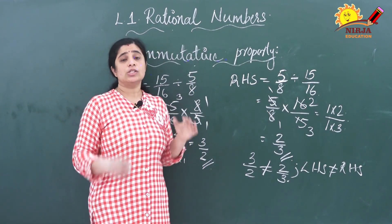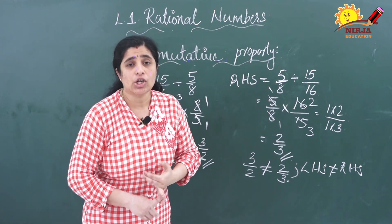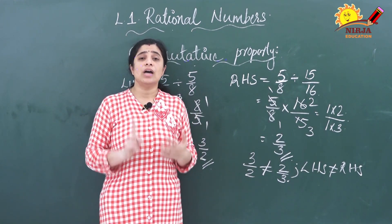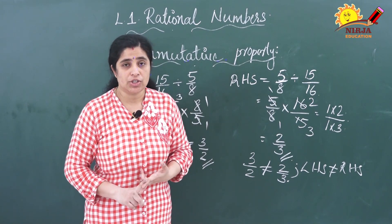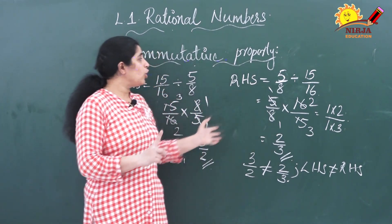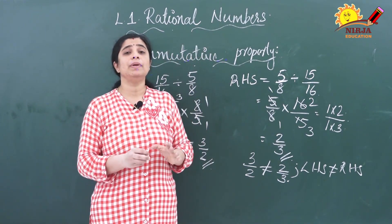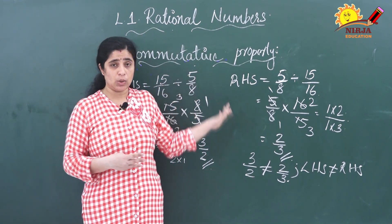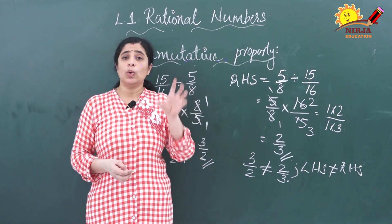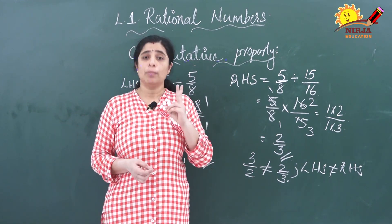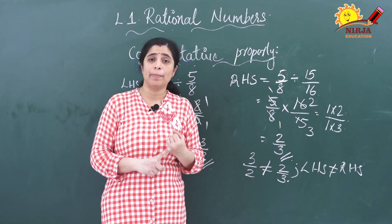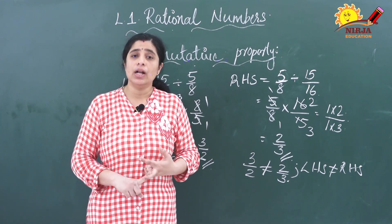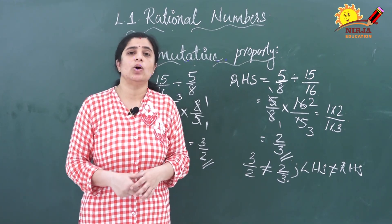So commutative property is not true in the case of division — division of rational numbers is not commutative. I hope all of you have understood the multiplication and division of rational numbers and the properties associated with this. In this video we discussed two properties: closure property and commutative property. Other properties I will explain in my next video. Thank you all.